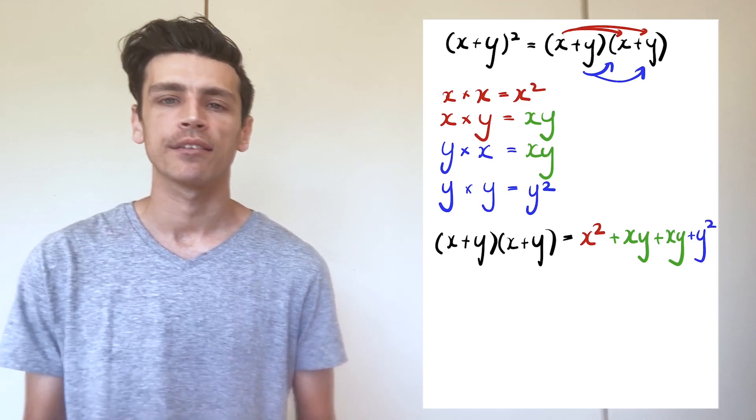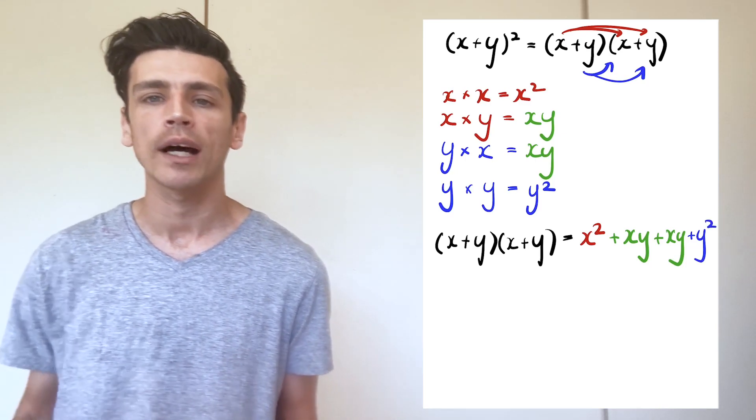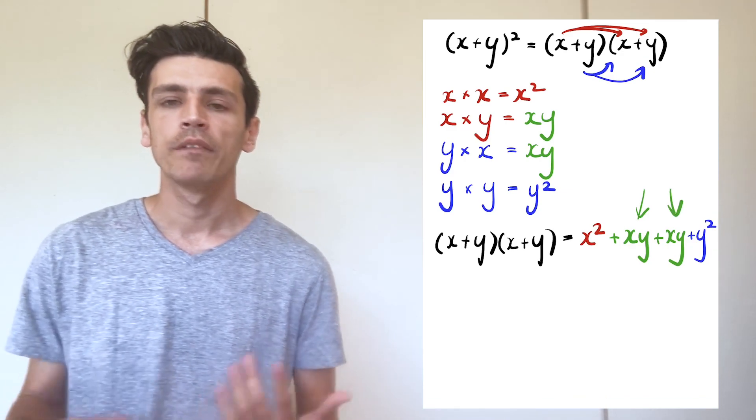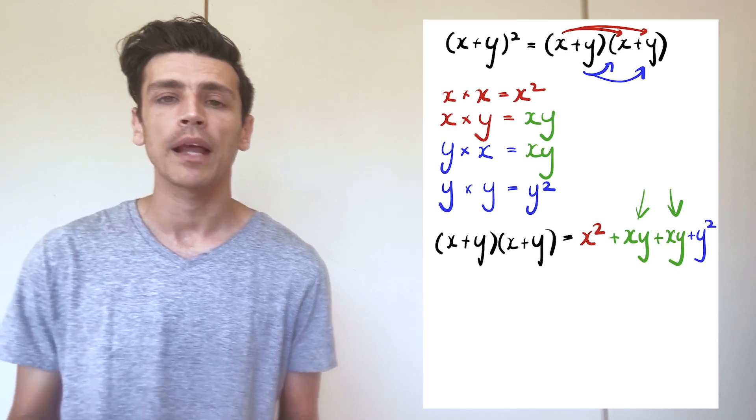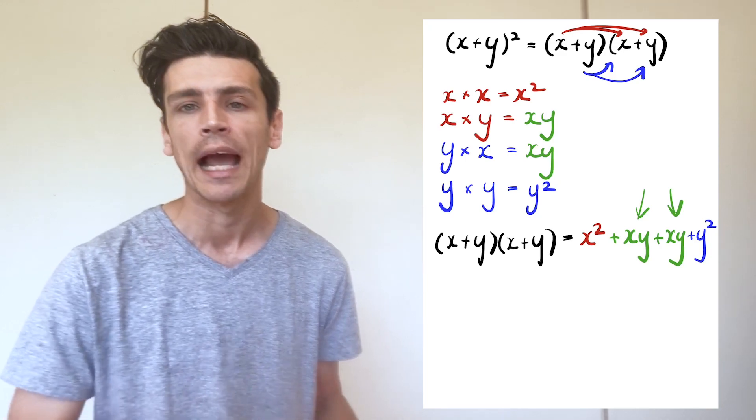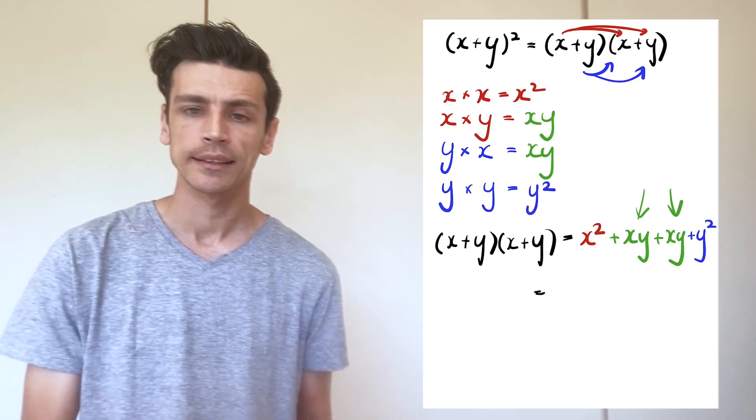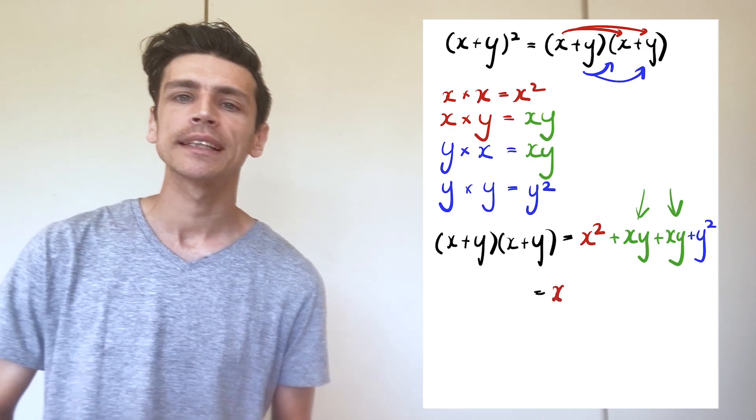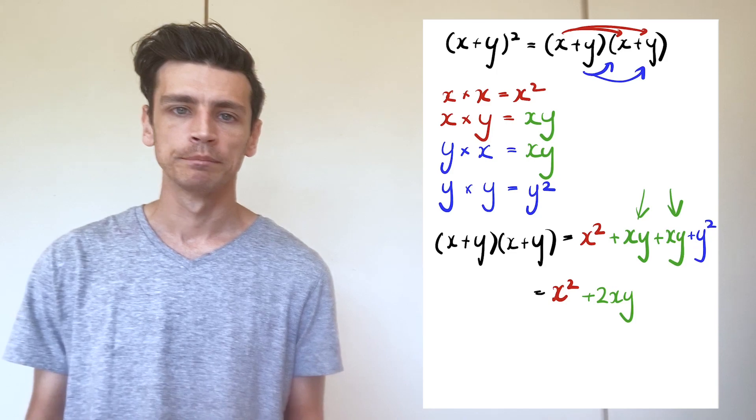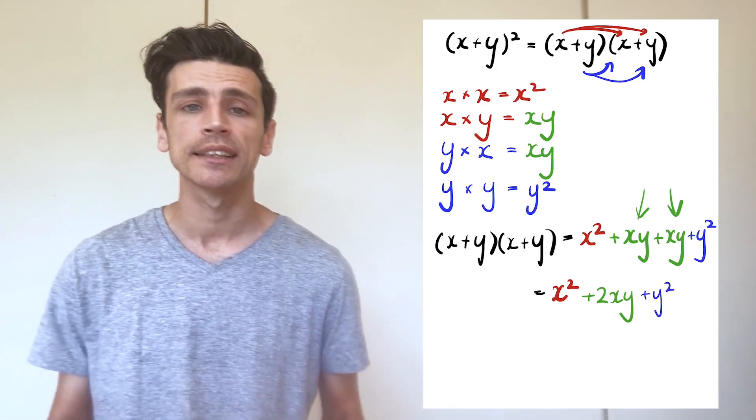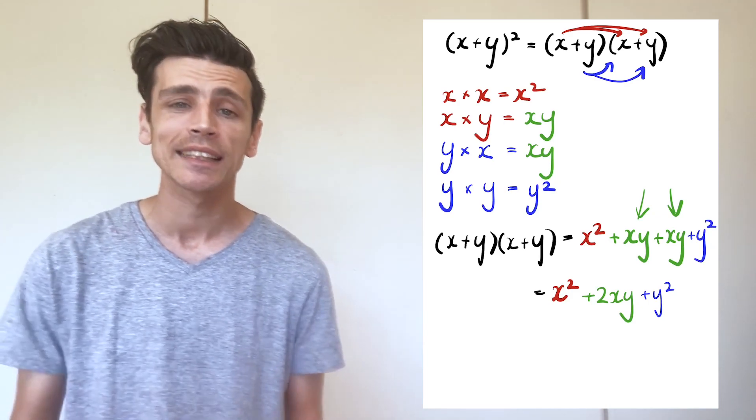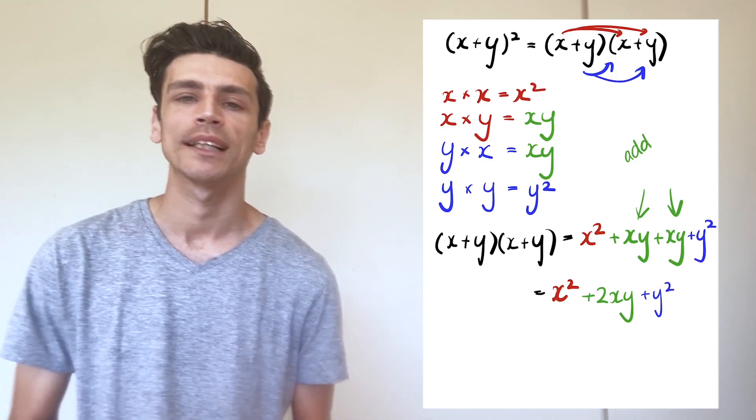Now we're trying to find like terms. Well, x squared and y squared, there's nothing like that in the rest of the equation, so they're going to remain the same. The only ones that look similar are our xy's. If we have xy plus xy, that's going to give us 2xy. So now we've got our solution: the bracket of x plus y to the power of 2 gives us x squared plus 2xy plus y squared.